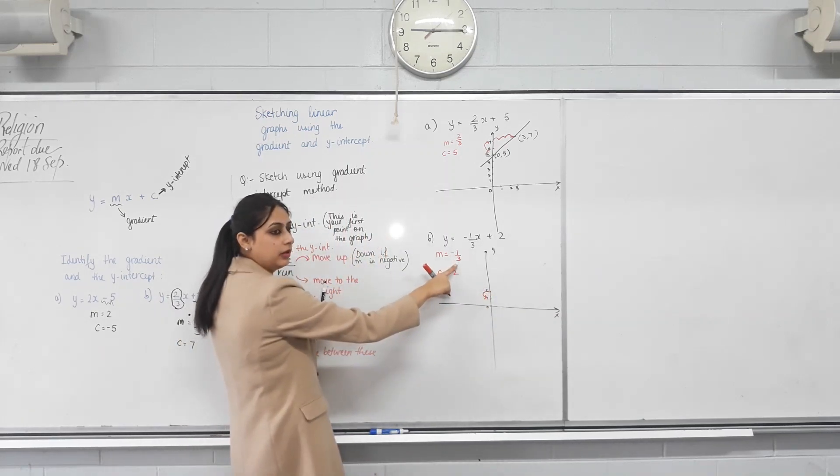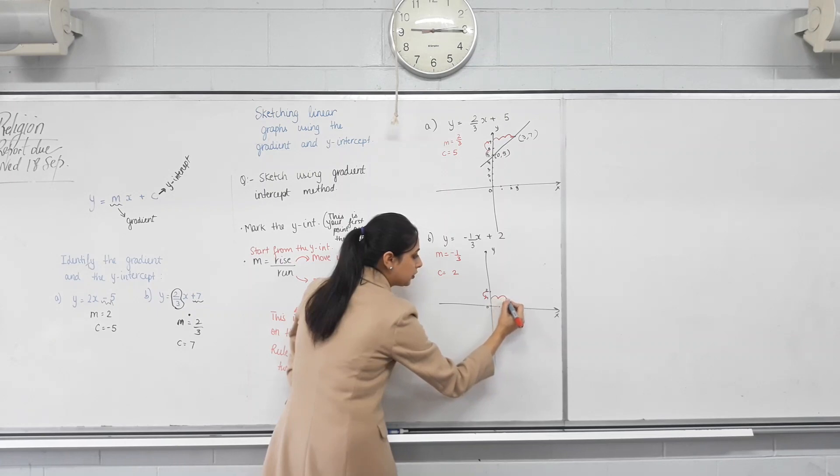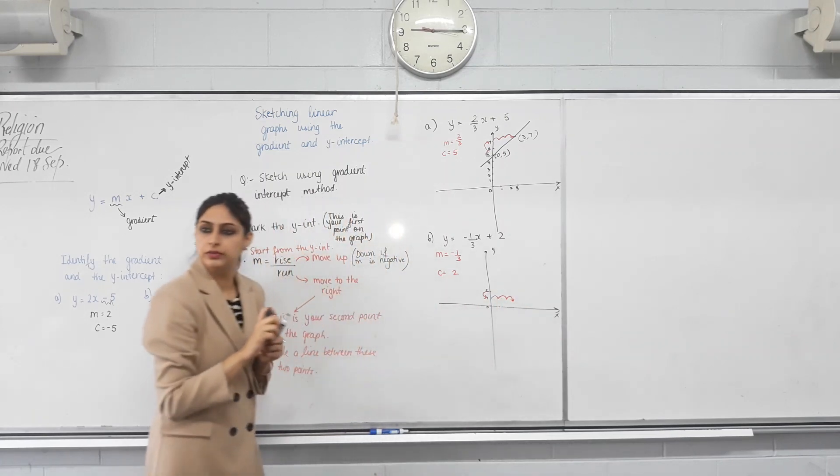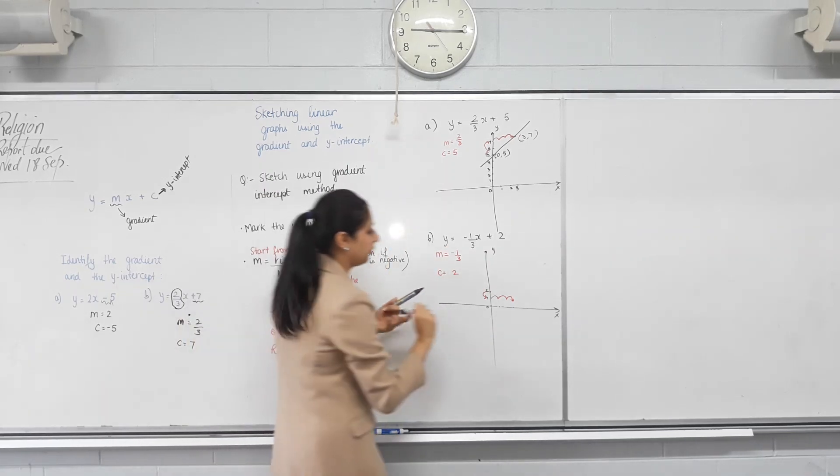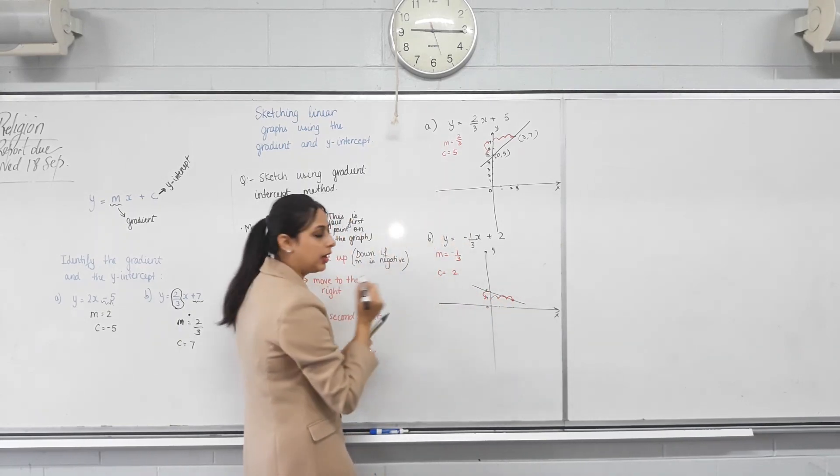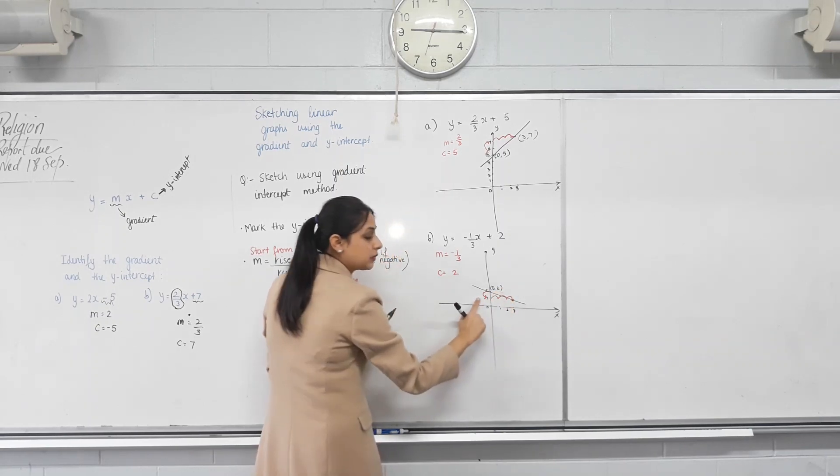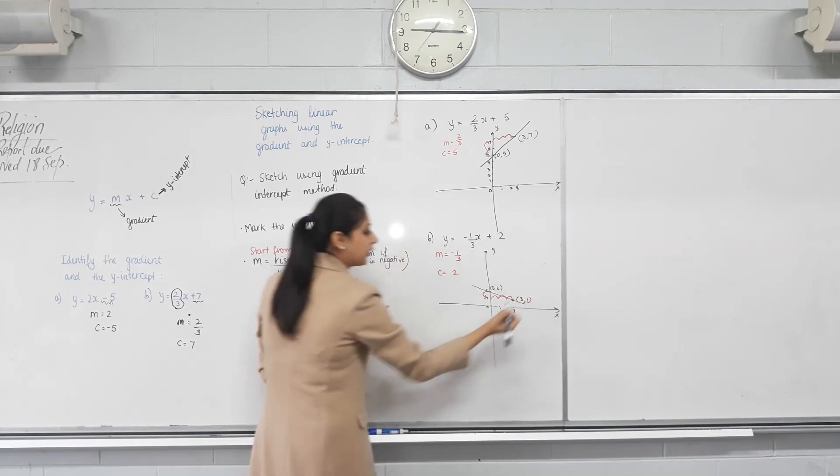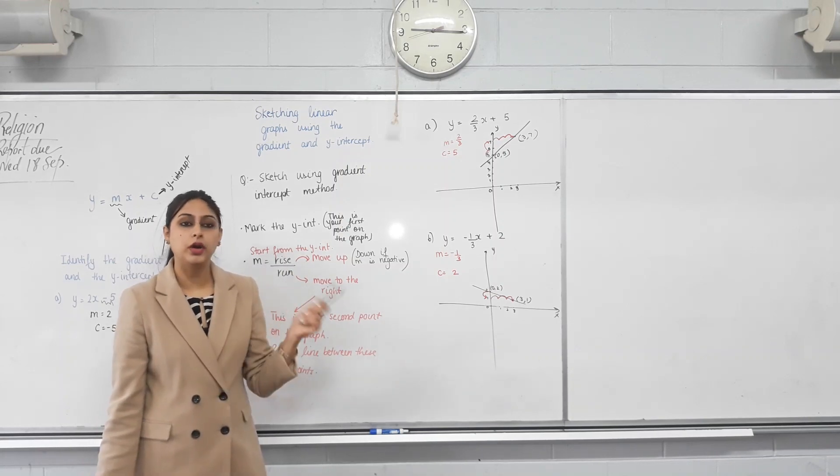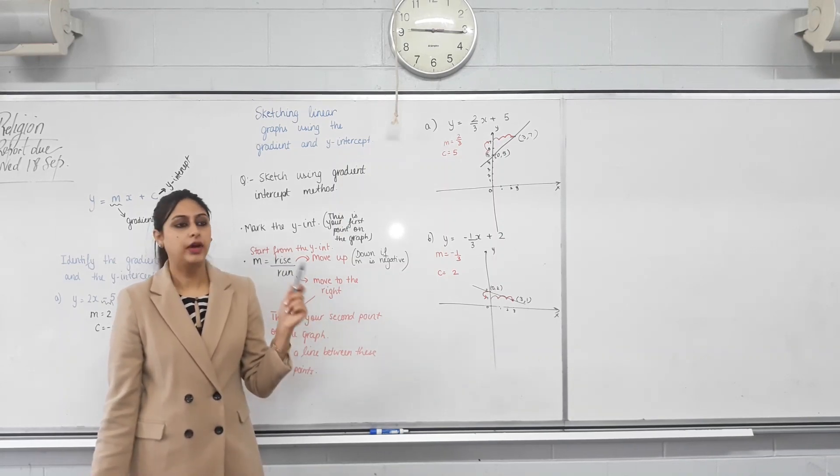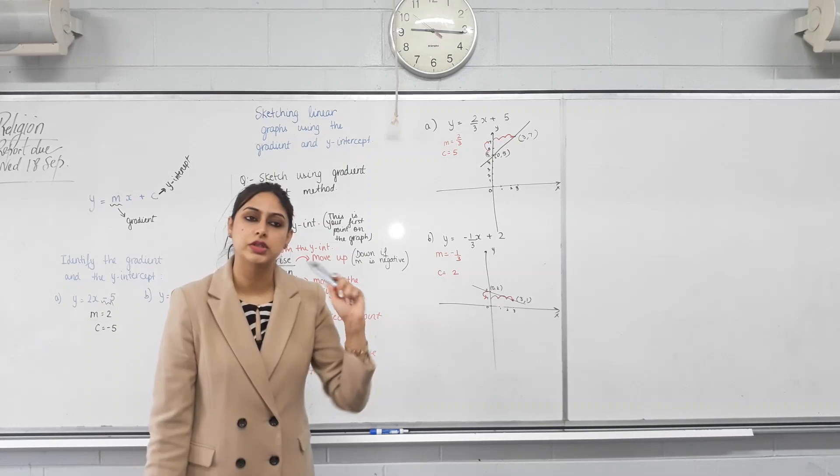And then, what's my run? Three. So, I move right. Three. So, one, two, three. This is my second point. So, the first point is my y-intercept. Second point is after you've done the rise and run. Draw a line through them. Marking the important points, this is zero, comma, two. What's the x-coordinate at this point? Three. And what's the y-coordinate? One. That's it. We've sketched it. Does that make sense? Do we all know how to find the gradient from the equation? Yeah. Finding the y-intercept, sketching the line. That's it. Let's do some questions and then we move on to sketching using the same.